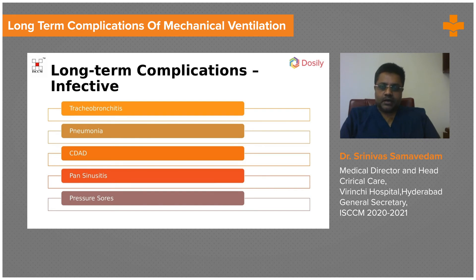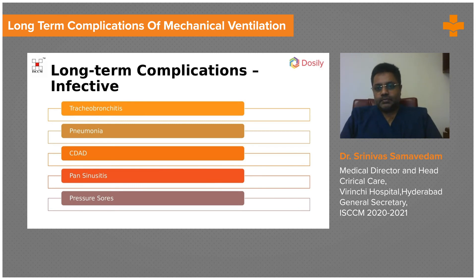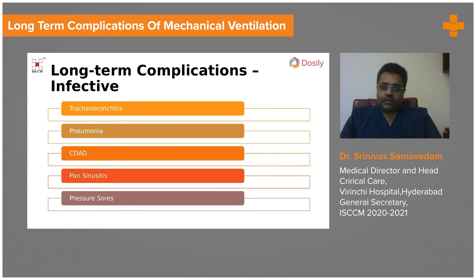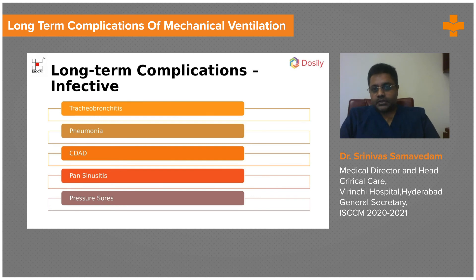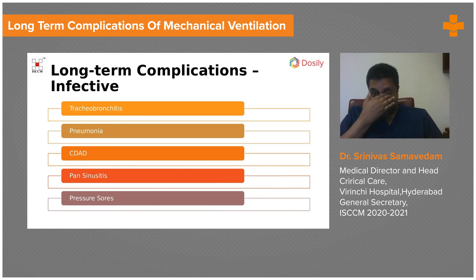The inappropriate use of antimicrobials and stress ulcer prophylaxis can predispose these patients to Clostridioides difficile-associated diarrhea. Mechanically ventilated patients are two to three times more at risk of developing C. difficile-associated diarrhea than patients who are not mechanically ventilated, so that is another important complication to watch for.